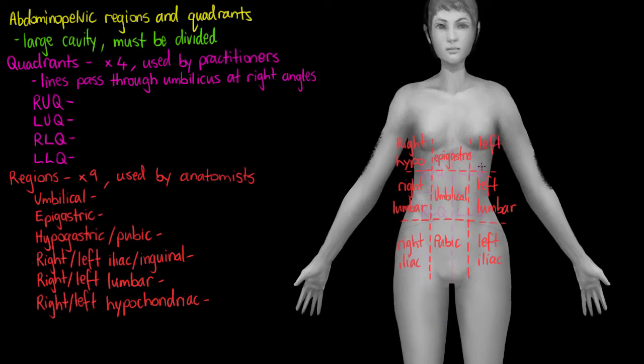So we have our four quadrants and nine regions now. And before we go any further I want you to have a bit of a think about what organs you would find in those quadrants and regions. And then we'll have a quick talk about it together.